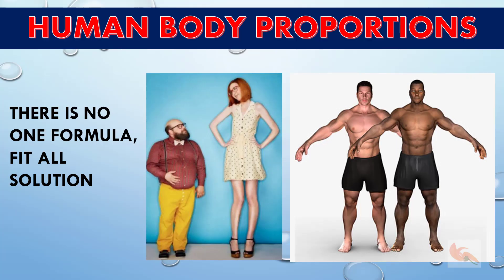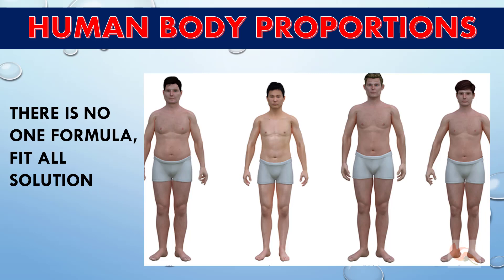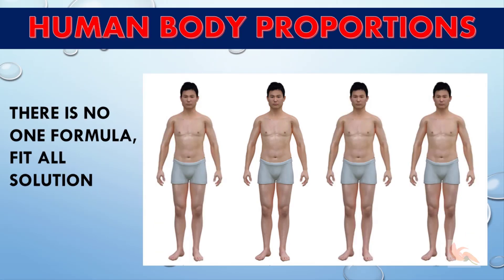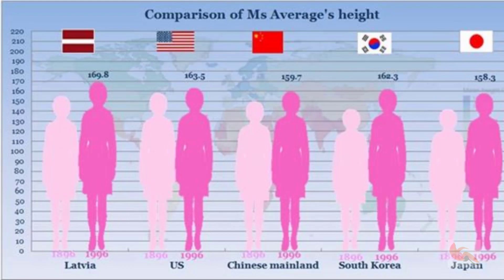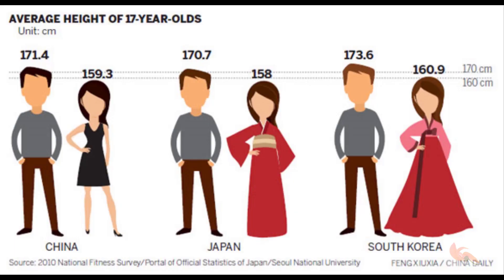No single formula will fit all human bodies. Had it been so, we all would have had same shapes, sizes and even faces. Imagine how difficult it would have been to distinguish from each other. Figure types vary from race to race and region to region.